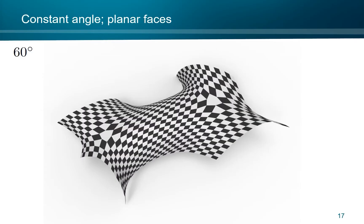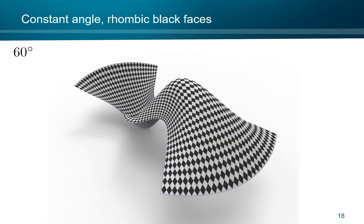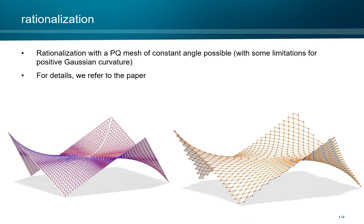This example shows a planar quad mesh with 60-degree angle, again 60-degree, but here the black faces are rhombuses. We can rationalize any shape with a planar quad mesh of constant angle, with some limitations for positive Gaussian curvature, but for details we refer to the paper.